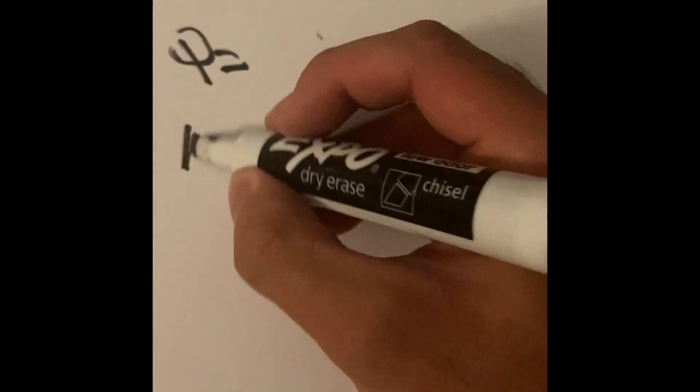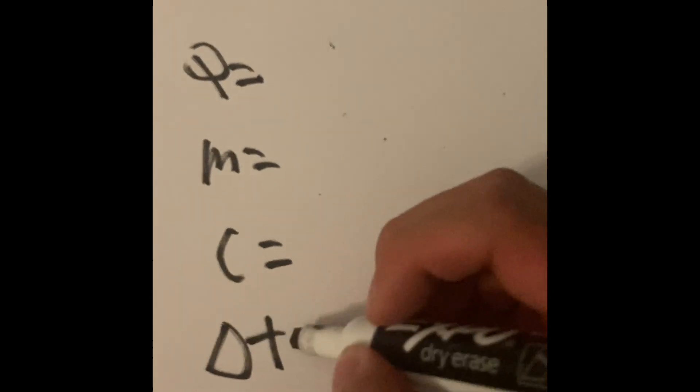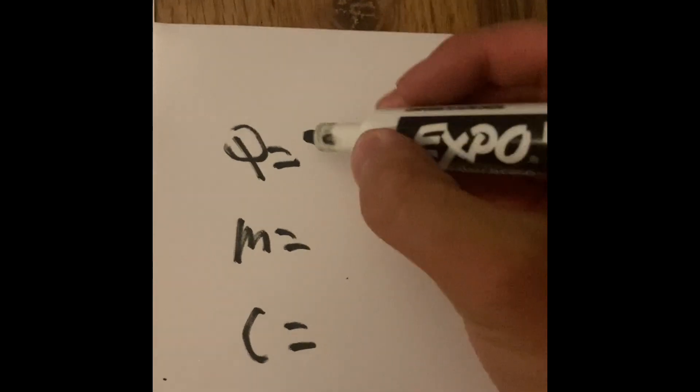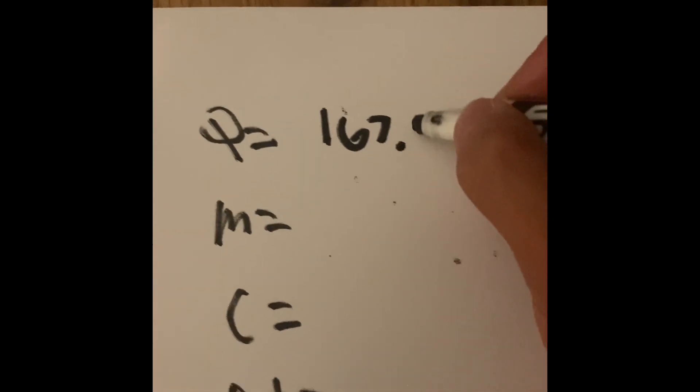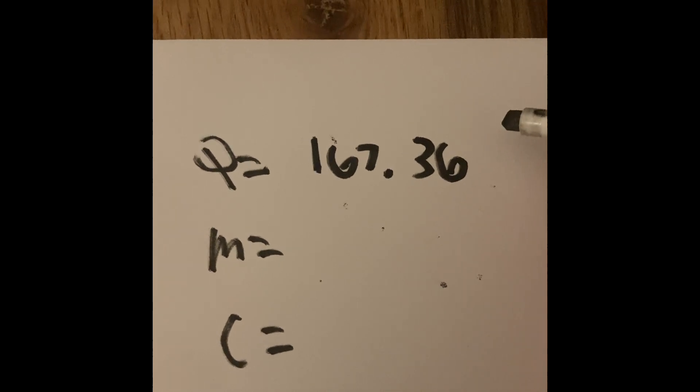Q equals, M equals, C equals, and delta T equals. We already said that Q, we're going to have 167.36 right here. The amount of joules of water.